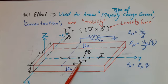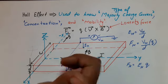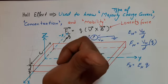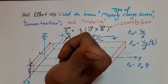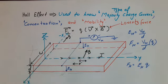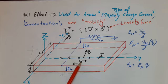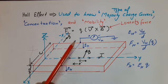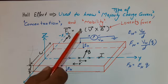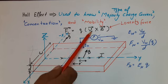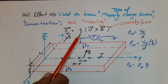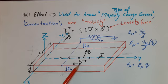For a hole (positive charge particle), its velocity is in the Y direction and magnetic field is in the −X direction. Taking V cross B — curling fingers from V to B — the thumb points upward, in the Z direction. So holes experience a force toward the upper face of the semiconductor. For electrons, velocity is opposite (−Y) and charge is also negative (−Q), so the two negatives cancel, meaning electrons experience a force in the same upward direction as holes. In the Hall experiment, both electrons and holes experience force in the same direction.